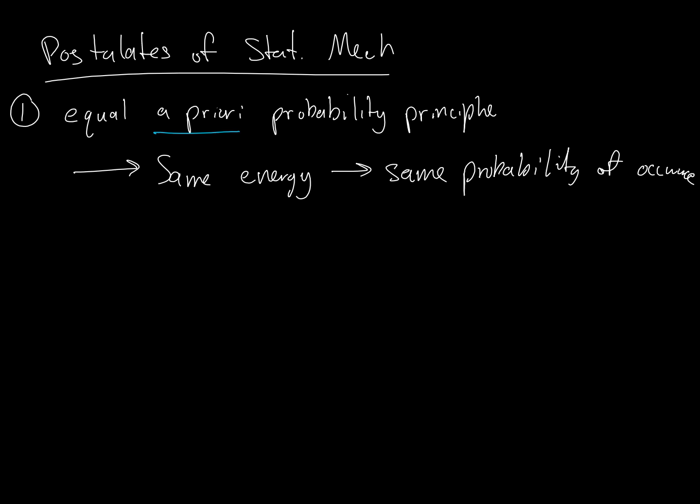A priori means that we have to assume it without any evidence. We have no evidence that this is true other than the assumption seems to work. What this hypothesis says—the essence of this is that if you have a microstate with the same energy, it must have the same probability. All right, so if you have a microstate that has a particular energy, and compare it to another microstate that has an equal amount of energy, those two states should have an exactly equal probability of occurrence.